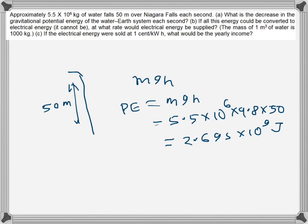Now the second part says, if all this energy could be converted to electrical energy (it cannot be), at what rate would electrical energy be supplied? What rate could it be supplied? That would be the power—that's what the question is asking.